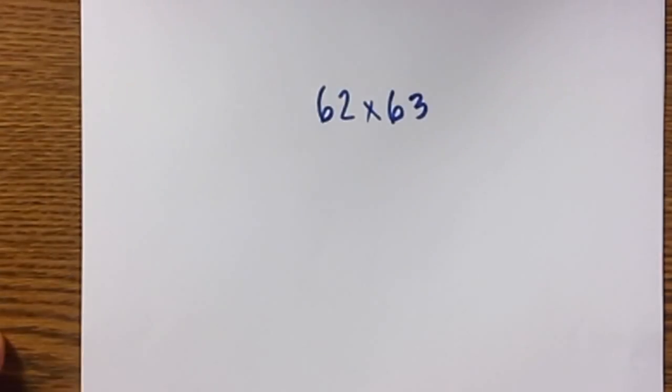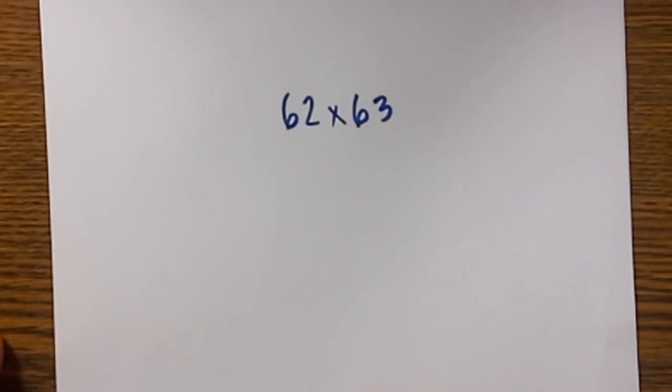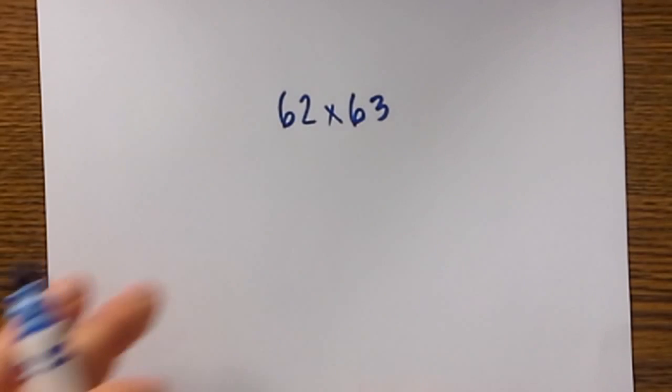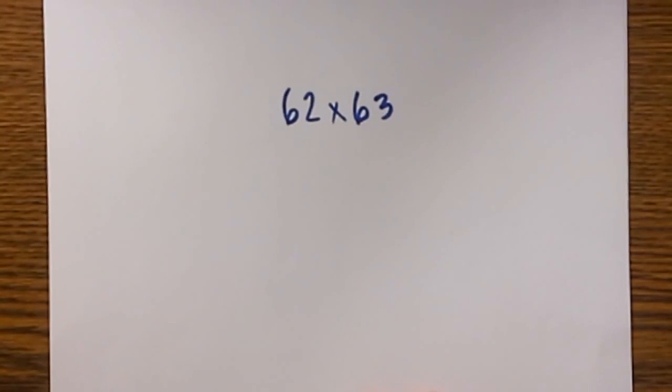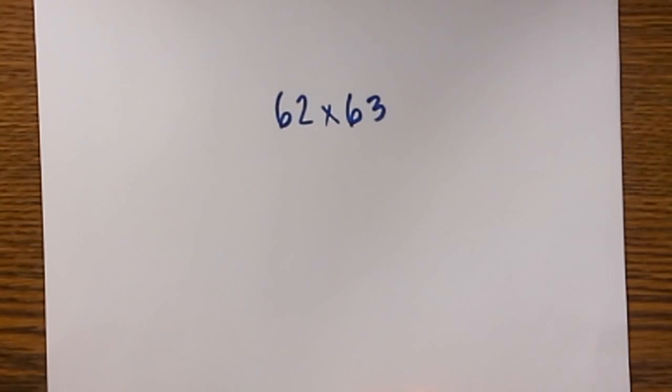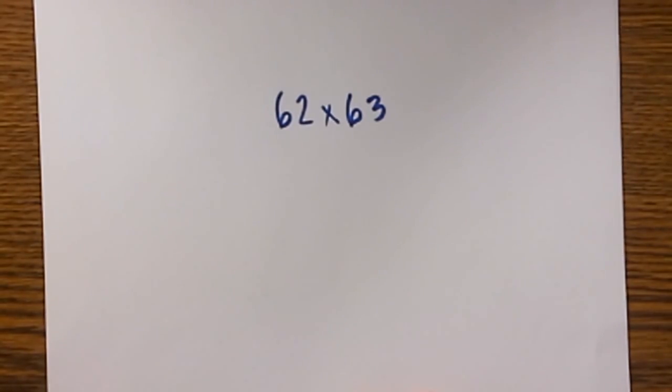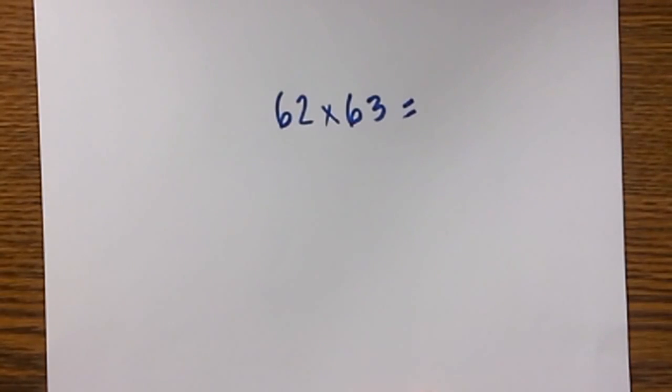Say for instance you have 62 times 63. As you know you can do it the traditional method or you can get out the calculator. But you may be in a situation where you don't have a calculator or can't use a calculator. Or if you practice this a little bit in some ways it can almost be faster than a calculator with practice.